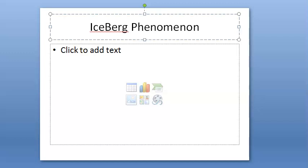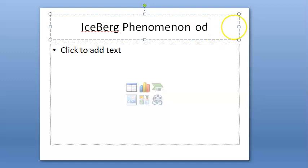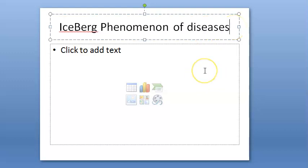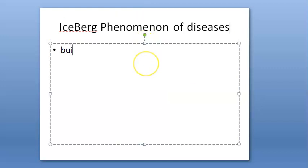In this video, let us look at what the iceberg phenomenon of diseases is. Basically, what does it mean, what is the application, and what are the examples? It is the biological spectrum of disease.